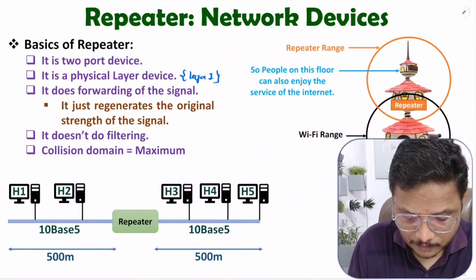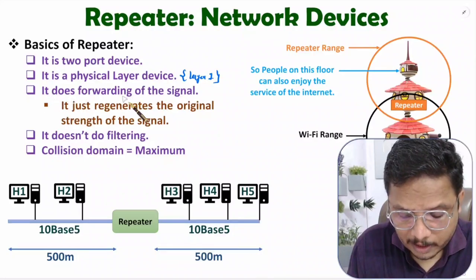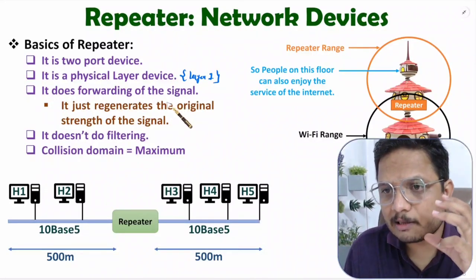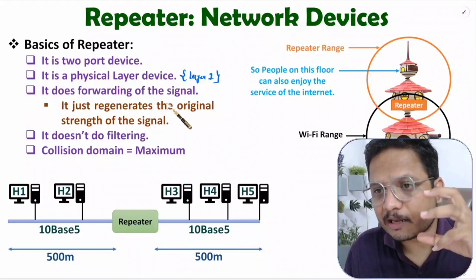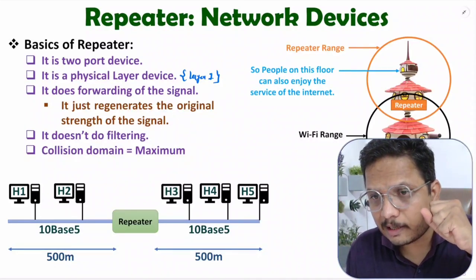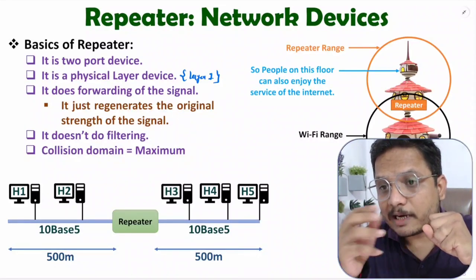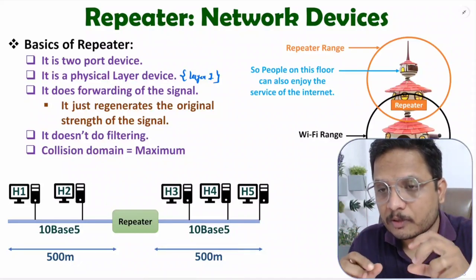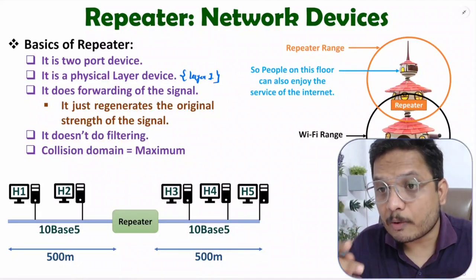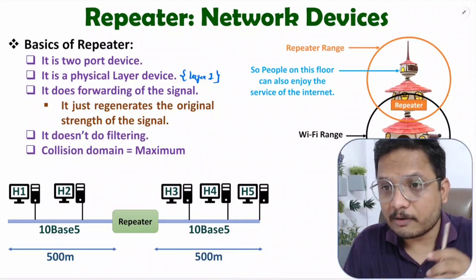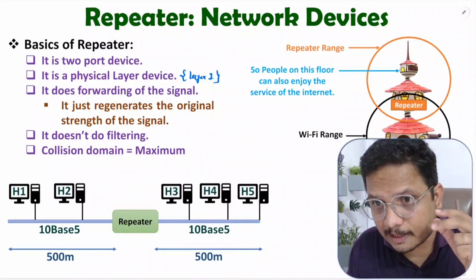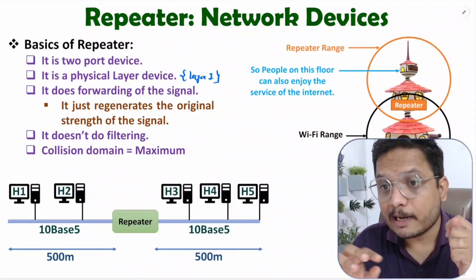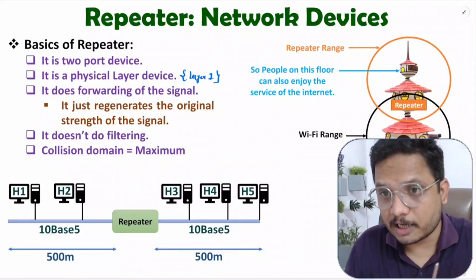The repeater does forwarding of the signal. Forwarding of signal means the repeater will take a weak signal and regenerate it with its original strength. So at the input side it receives a weak signal, and at the output side it regenerates the original strength.